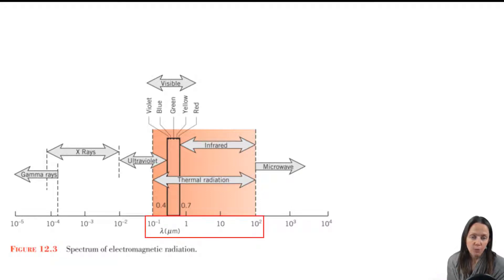And that's the radiation that's emitted because a body is above absolute zero. We can see that that thermal radiation falls between 0.1 and 100 microns, which you can see on the axis here. And those microns refer to wavelength or lambda.